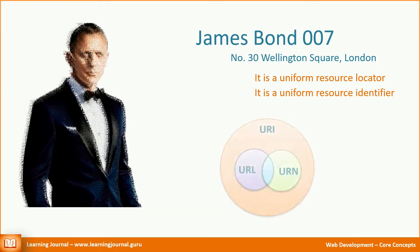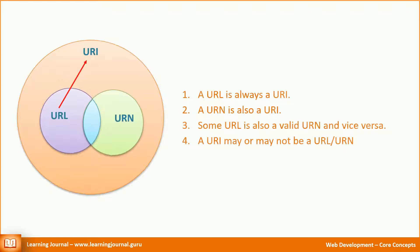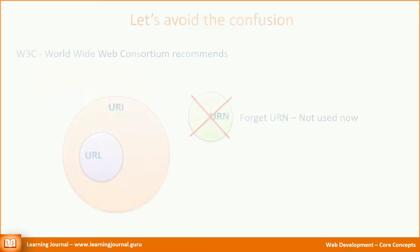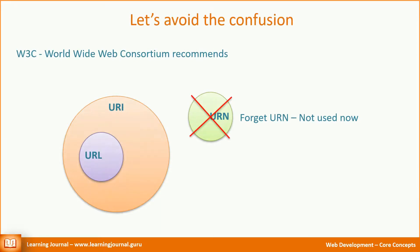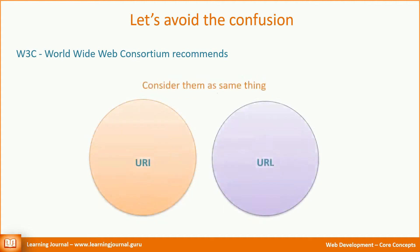Let us try to improve our earlier diagram. To summarize: a URL is always a URI; a URN is also a URI; some URLs are also valid URNs and vice versa; and a URI may or may not be a URL or URN. However, to avoid this confusion, W3C — the main international standards organization for the World Wide Web — issued a URI clarification document. The document clarifies that URI and URL are the same things.